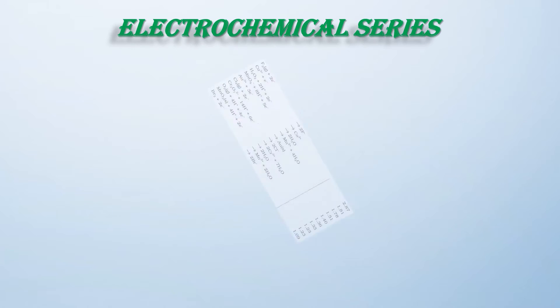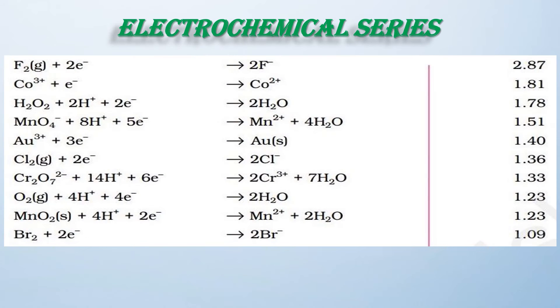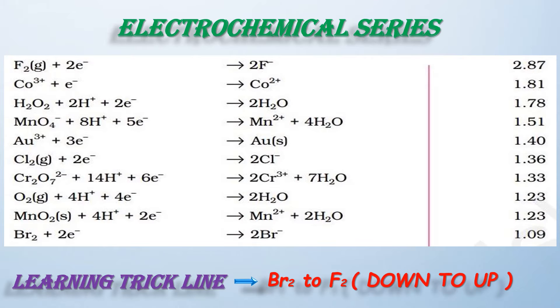यह है हमारी Electrochemical Series की table। इसकी learning trick line BR2 से F2 तक है। Down to up हमारी जो learning trick line बनी है वो BR2 से लेकर F2 तक है। यह सब आप लोग जानते होंगे कि previous video में यही process रहा है। अब मैं आप लोगों को बताने जा रहा हूं हमारी learning trick line के बारे में।